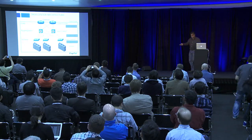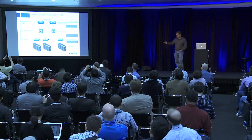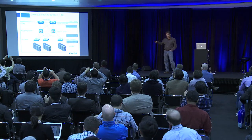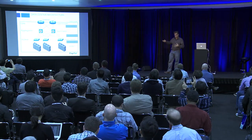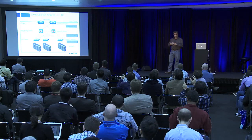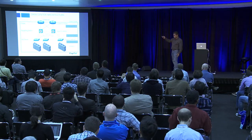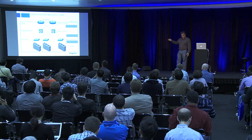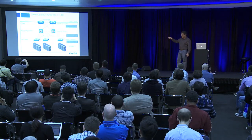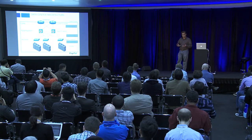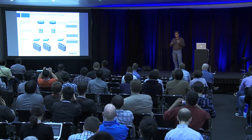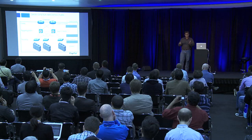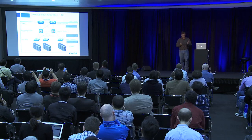This is our standard data center architecture. This is not a representation of exactly what we do at PayPal, but it's to scale — a miniature scale. We have a core layer, an aggregation layer, and an access layer. The access layer is our top-of-rack switches. Racks with hypervisors or compute nodes are connected to the access layer, usually dual-connected for redundancy.